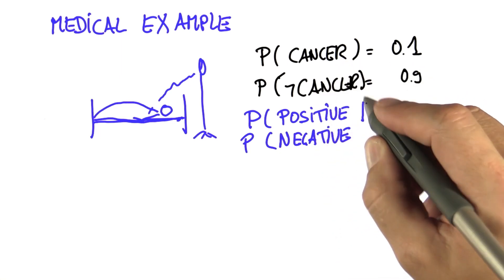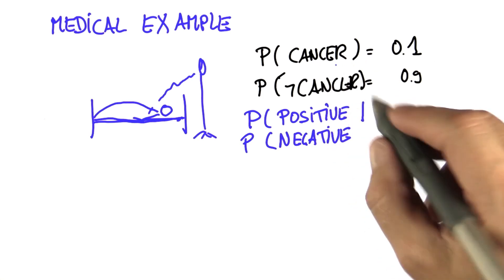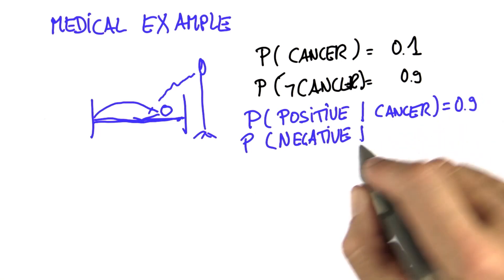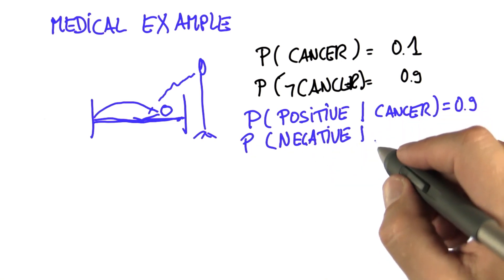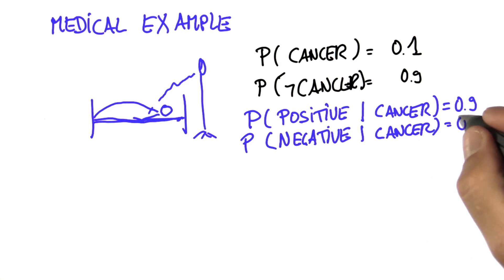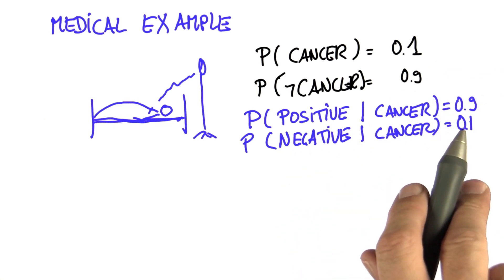So let's say if the person has the cancer, the test comes up positive with a probability of 0.9. And that implies if the person has cancer, the negative outcome will have a 0.1 probability. And that's because these two things have to add up to one.